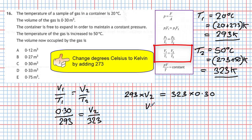So to find V2 we just bracket the top: 323 times 0.30 and divide that by 293. And if we do that with a calculator we get an answer of 0.33 meters cubed of gas. So we have an answer of 16D.